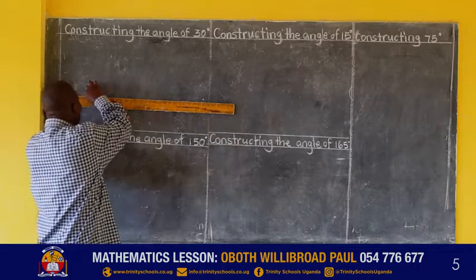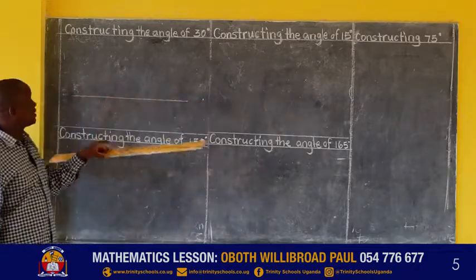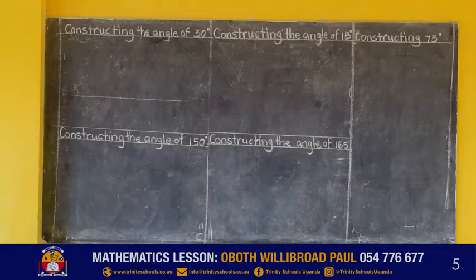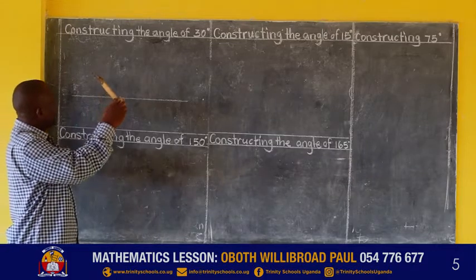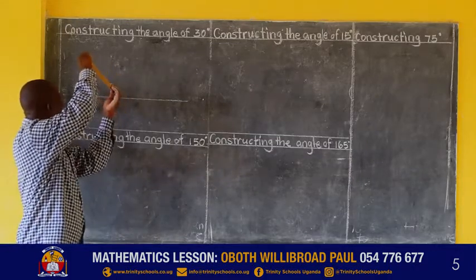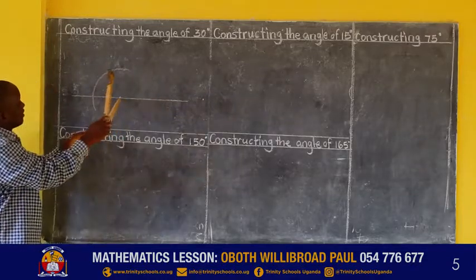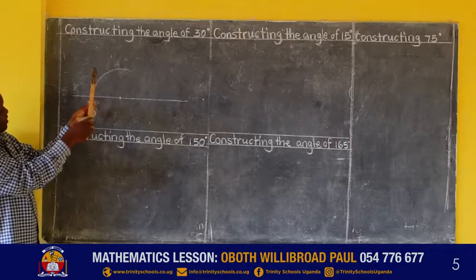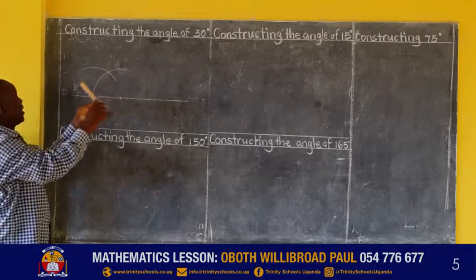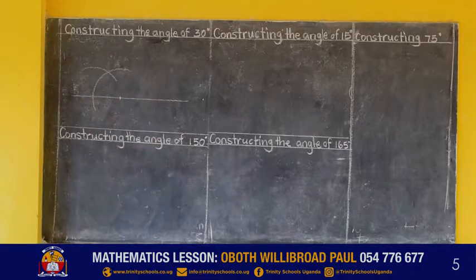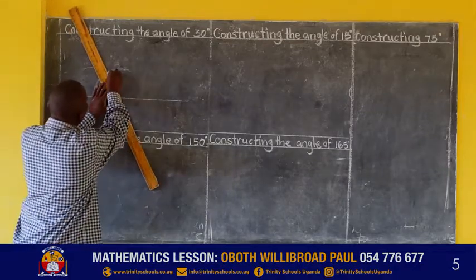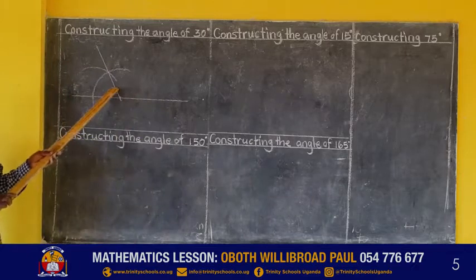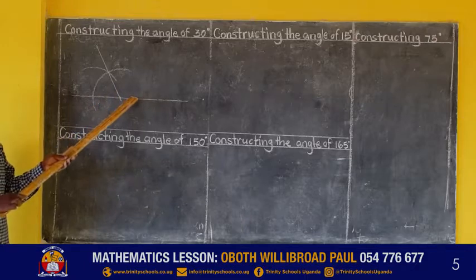You start by drawing your line, which I'm calling the starting line. Mark a point on that line and get your pair of compasses. Draw an arc. Then without changing the radius, place your pair of compasses at the point where the arc cuts the line and draw another arc to cut the first arc. That angle we have constructed when we join gives us two angles: 60 degrees and 120 degrees.